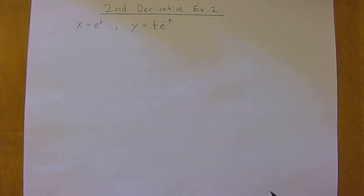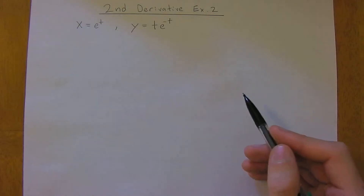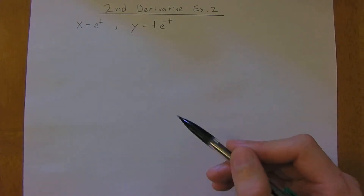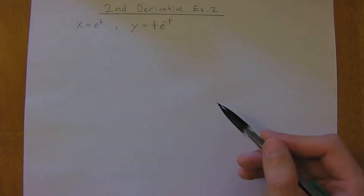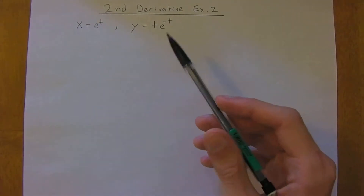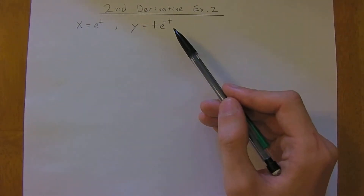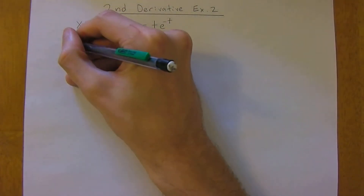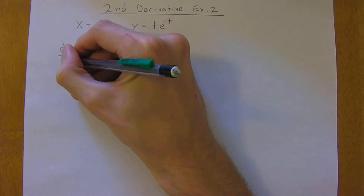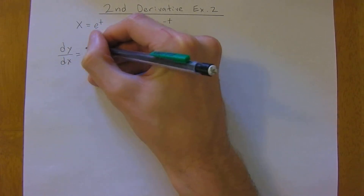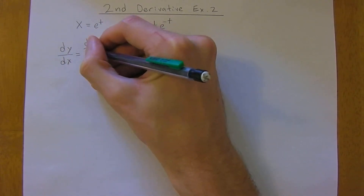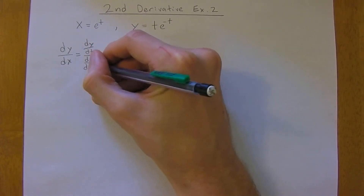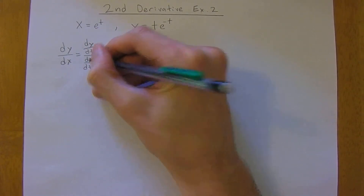So I've got another example here. We're still going to find dy/dx and the second derivative of y with respect to x, and then we're going to determine for which values of t this curve is concave up. So we'll start by taking dy/dx, which is dy/dt divided by dx/dt. Hopefully this is becoming familiar.